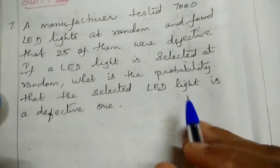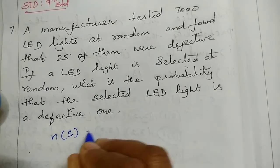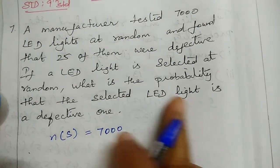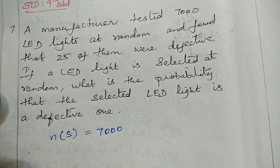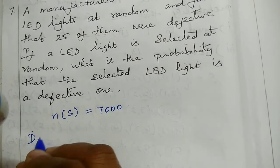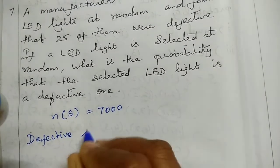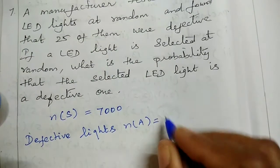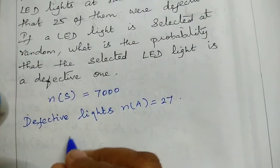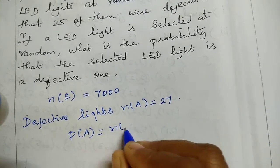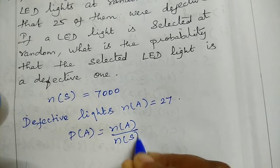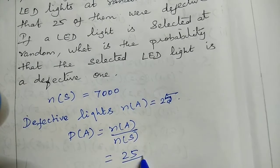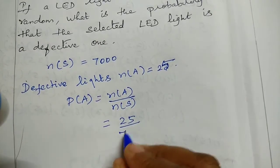The sample space n of S is 7000 LED lights. For defective lights, we use the formula P of A equals n of A by n of S. That's 25 by 7000.